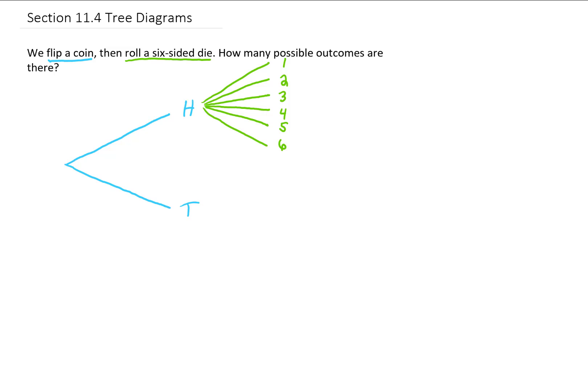If instead of flipping a heads we flip tails with our coin, our die roll still has six possible outcomes. Again, we could roll a one, a two, three, four, five, or a six. What we just drew is called a tree diagram, and this allows us to visualize all the possible outcomes of these two events.